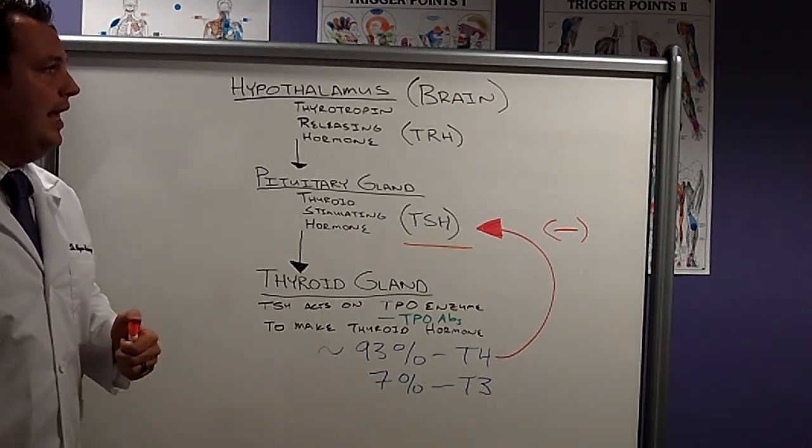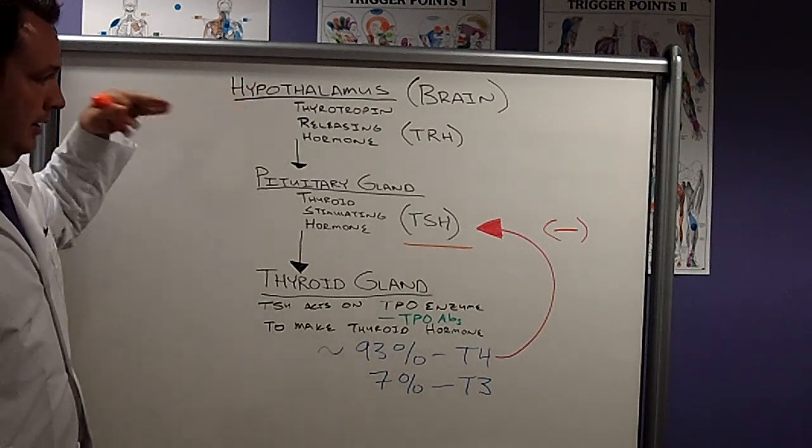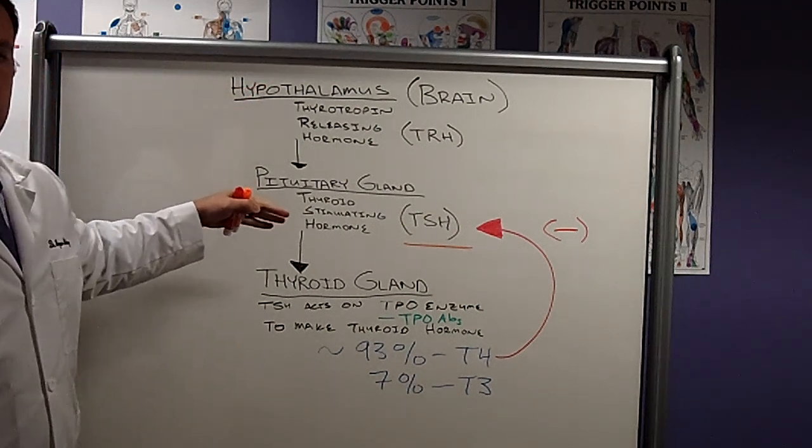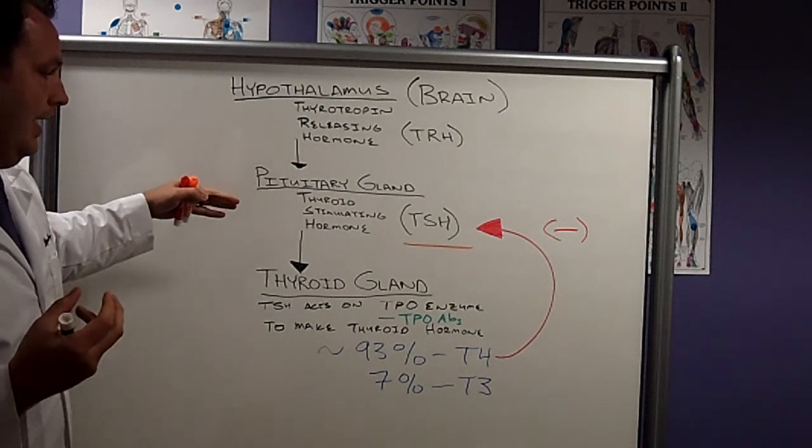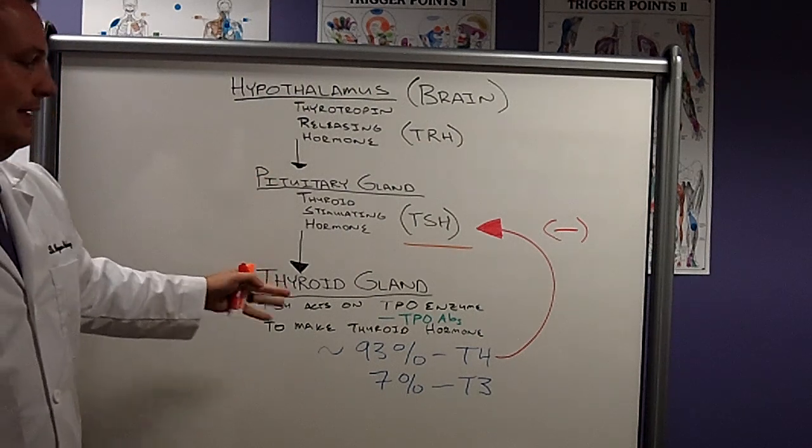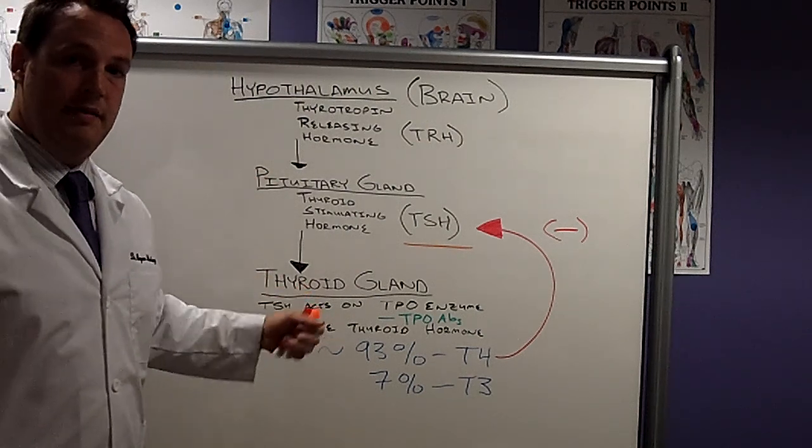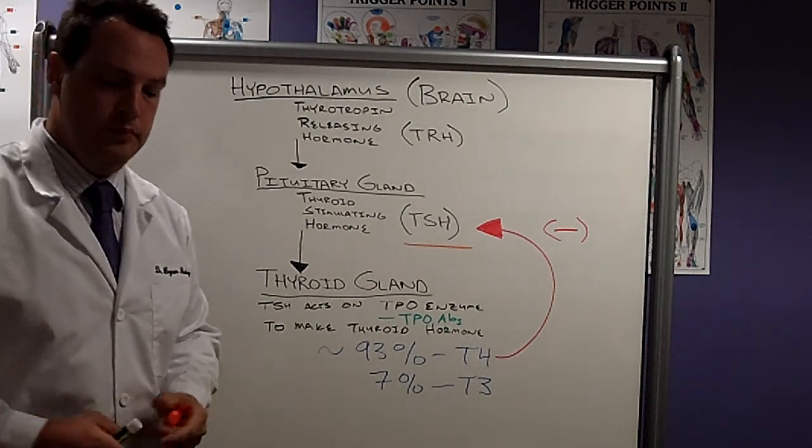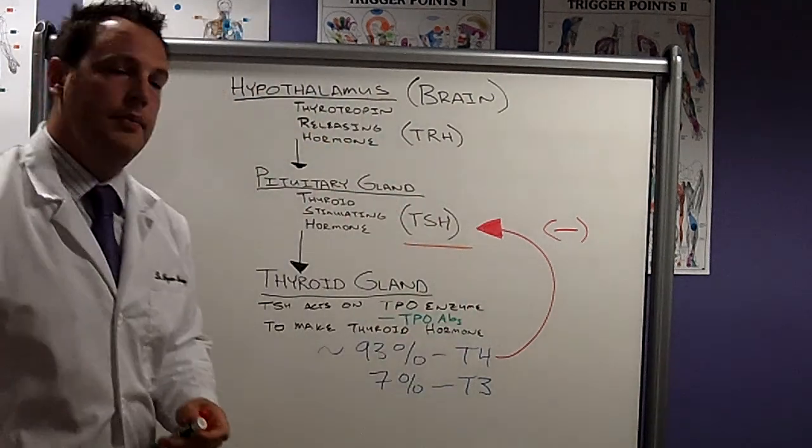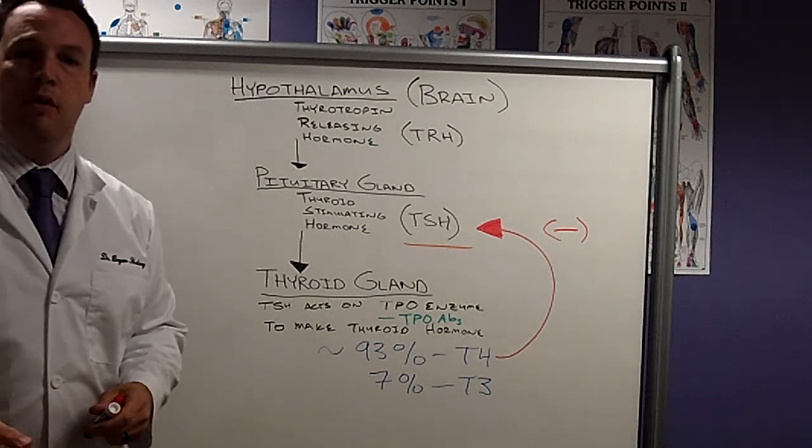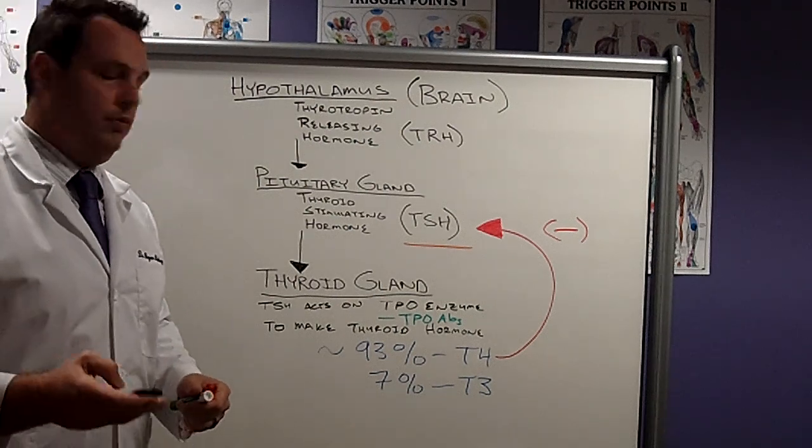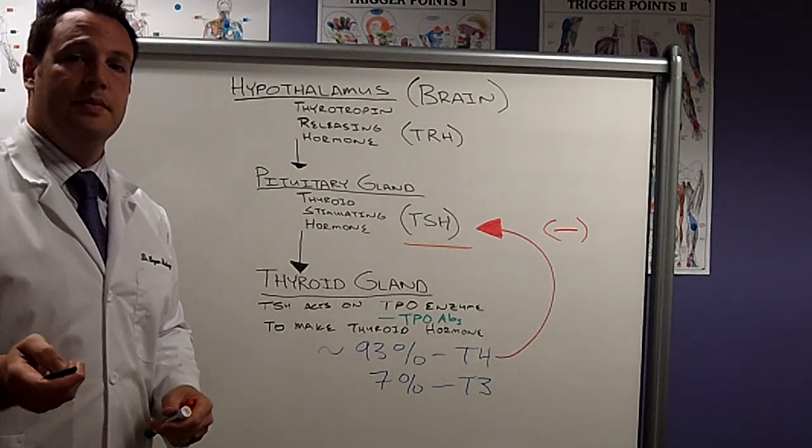So again, what we're looking at is brain function. The brain function acts on the pituitary gland, which is an outpocketing of the brain. The pituitary acts on the thyroid gland to tell the enzyme to produce thyroid hormone. This is the first step in understanding thyroid hormone metabolism. Please join us again for our follow-up steps. Thank you.